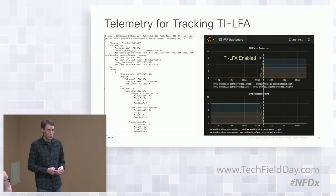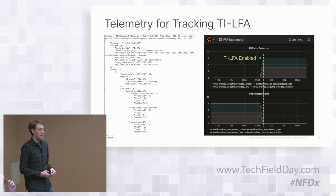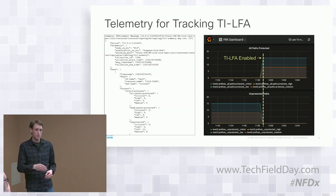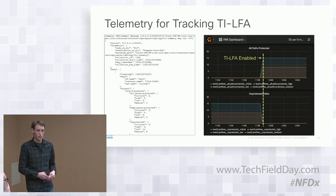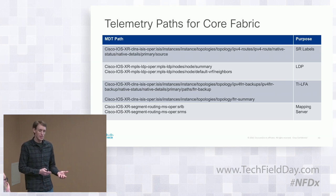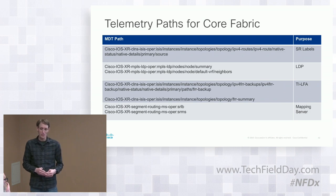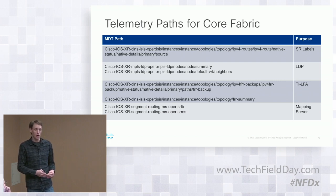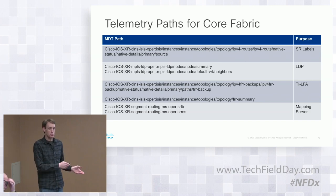Another example is TI-LFA — there are specific telemetry sensors monitoring those paths. When TI-LFA is enabled, you can almost instantly see in a tool like Grafana the population of those statistics. This uses Pipeline, an open-source telemetry collector — currently Cisco-specific — outputting to InfluxDB or Kafka with Grafana on top. The idea with all these designs is to tell people what they should monitor and how they should monitor it. Telemetry paths are not super intuitive to find in a model, so the design tells you what to monitor and provides configuration to monitor those specific things.